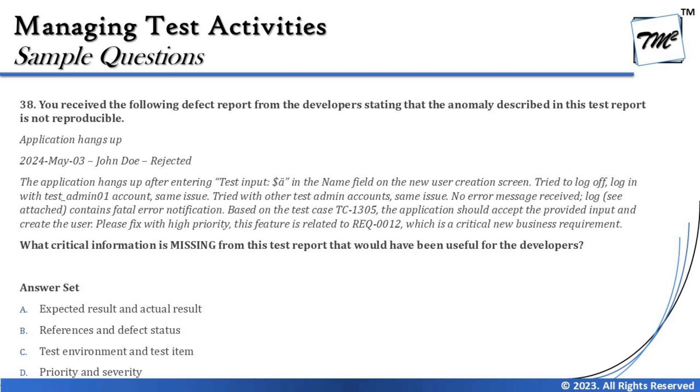The question asks: what critical information is missing from the defect report that would have helped the developer reproduce the issue? Something is missing even though the report seems fairly complete — test case reference is given, test inputs are given, credentials tried are mentioned. If you are unsure, read the options and put each one back into the scenario to verify whether the information is present or absent.